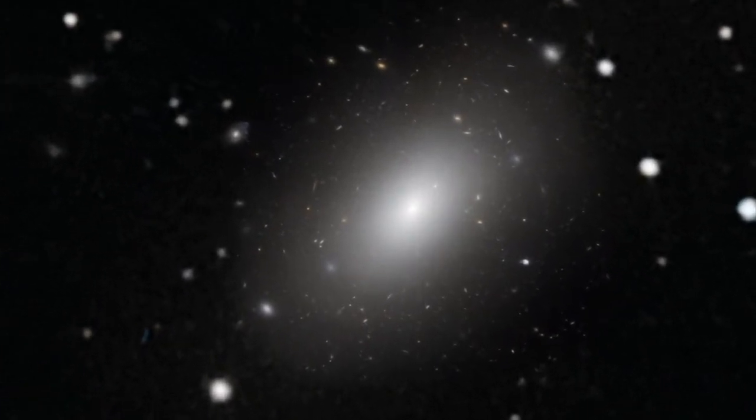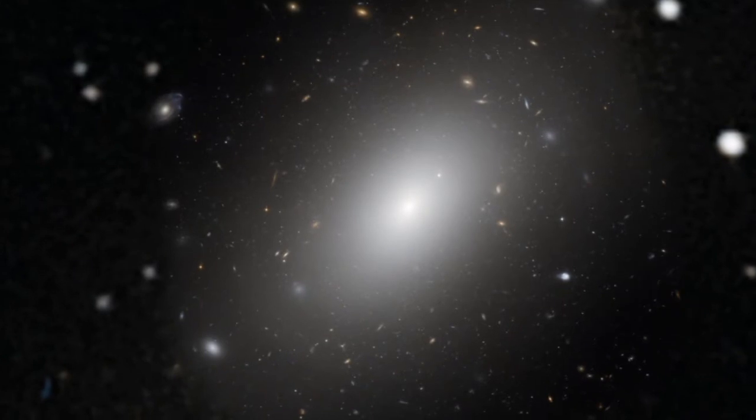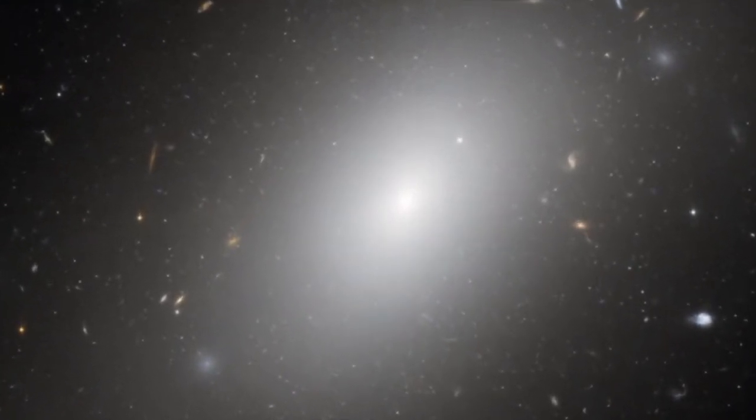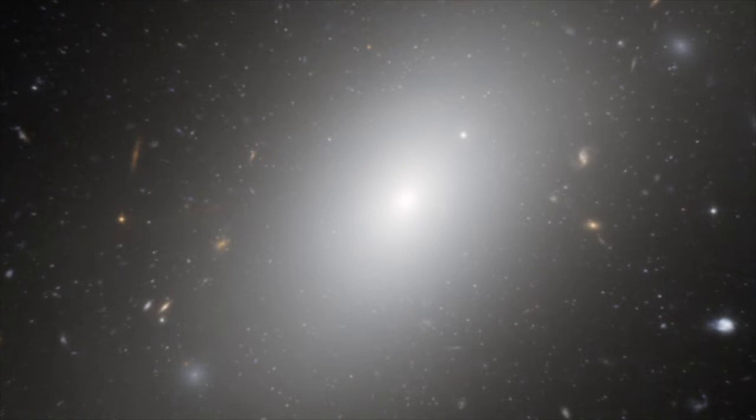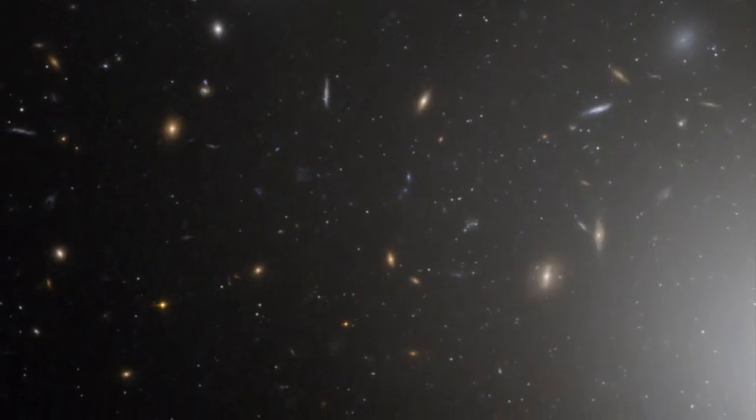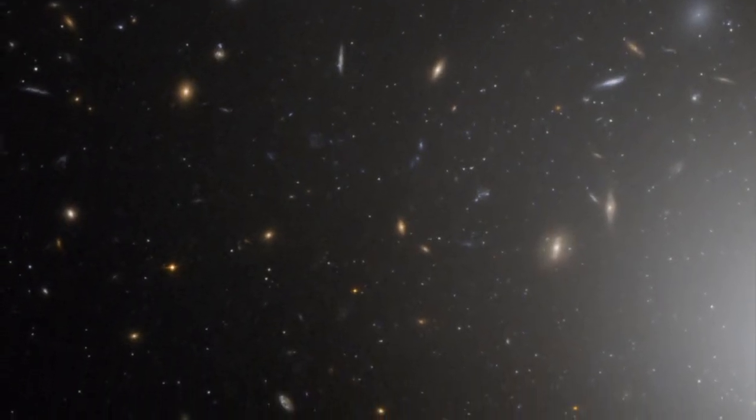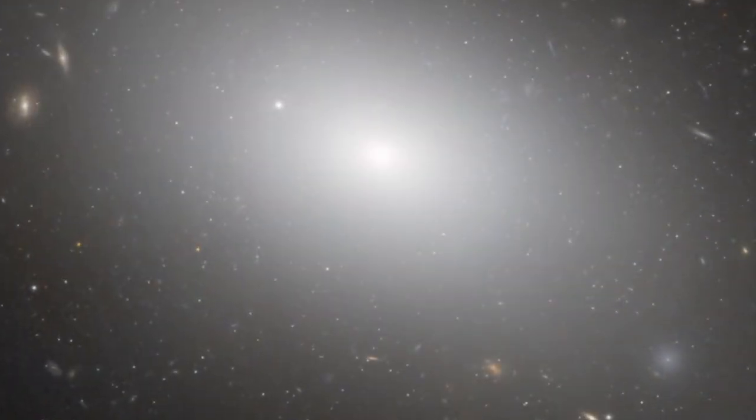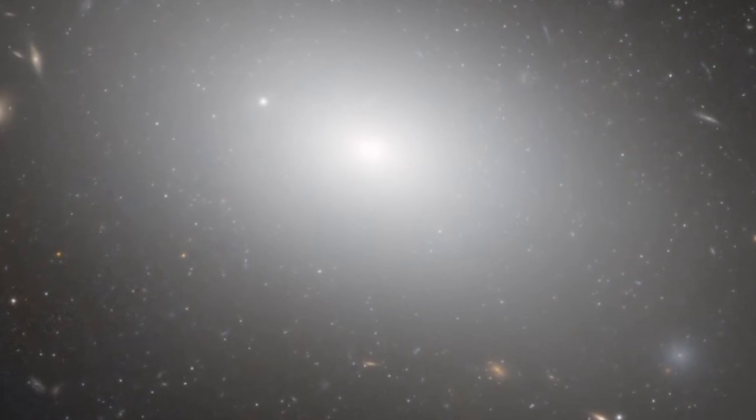Seen in visible light, NGC 1132 appears as a single, almost isolated giant galaxy. But this is only the tip of the iceberg. Scientists have found that NGC 1132 resides in an enormous halo of dark matter, comparable to the amount usually found in an entire group of tens to hundreds of galaxies.